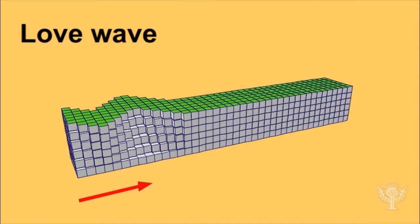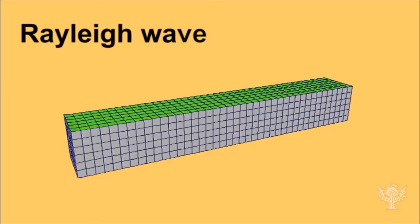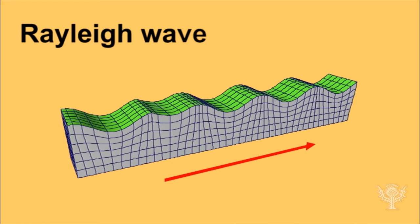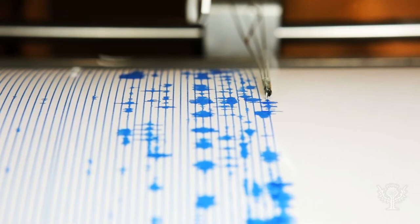After P and S waves come surface waves, which follow body waves and cause the most damage. Surface waves include the fast Love waves, named for British seismologist A.E.H. Love, which create horizontal movement, and the slow but larger Rayleigh waves, named for British physicist Lord Rayleigh, which produce most of the ground movement felt during an earthquake.